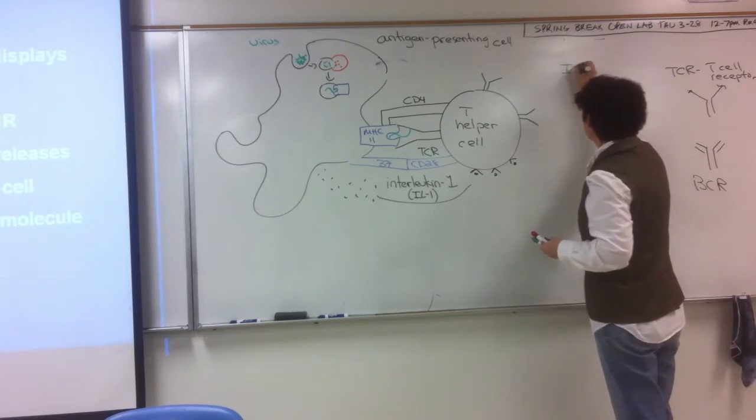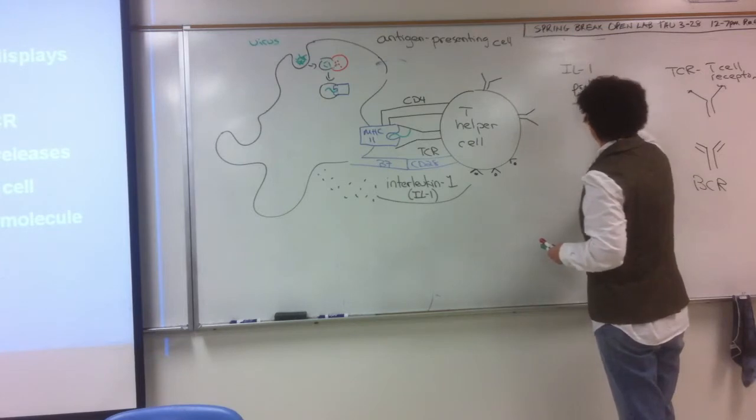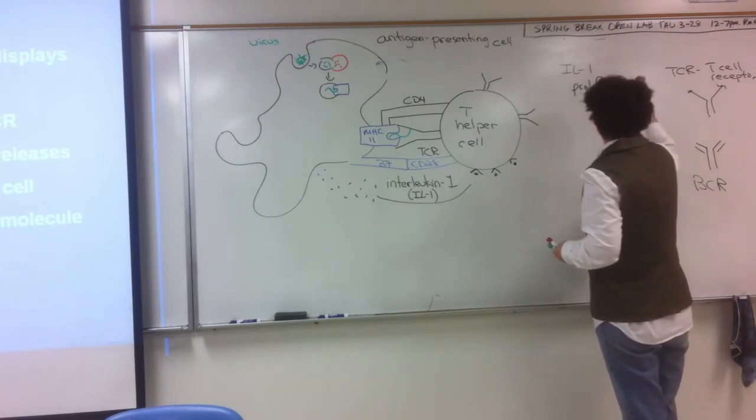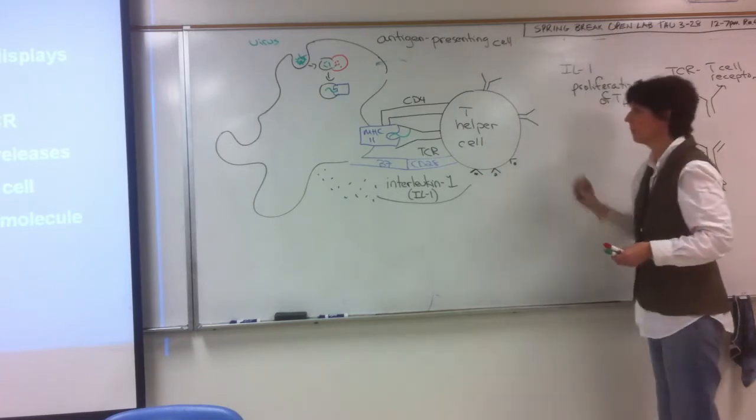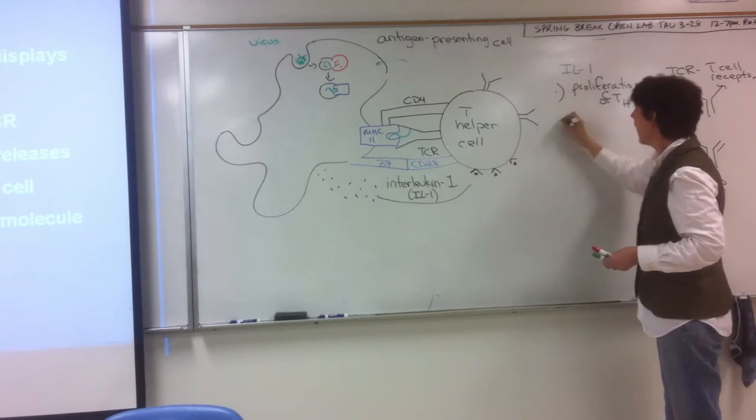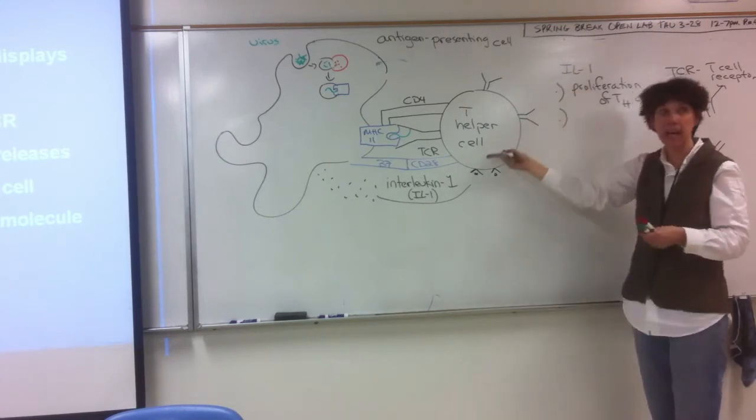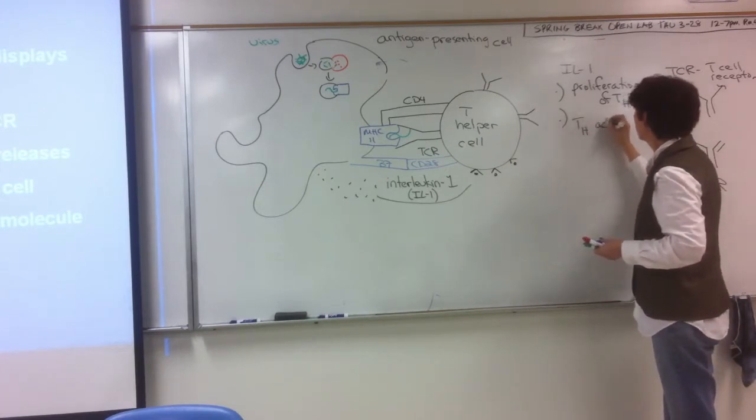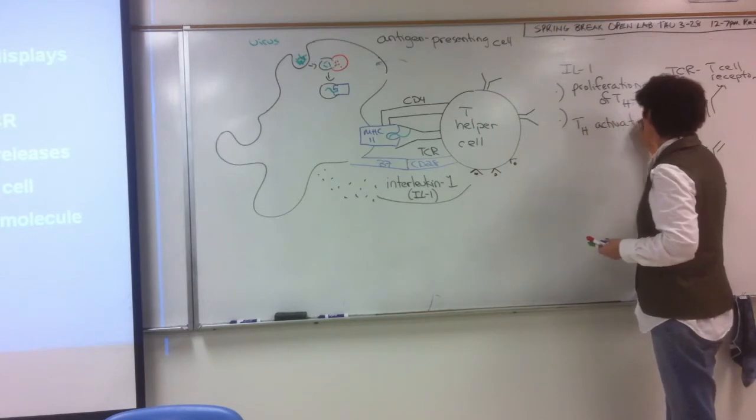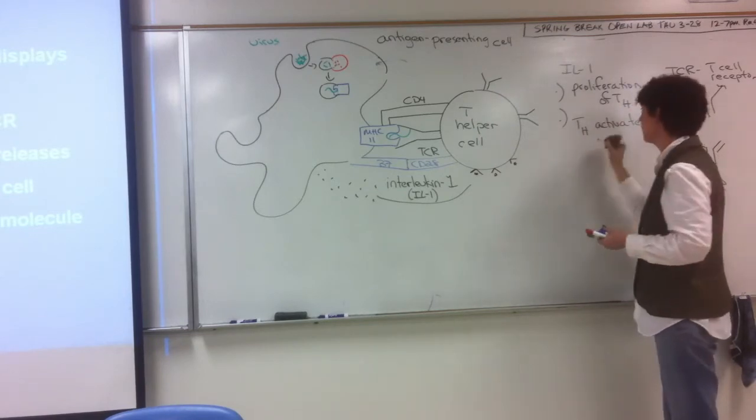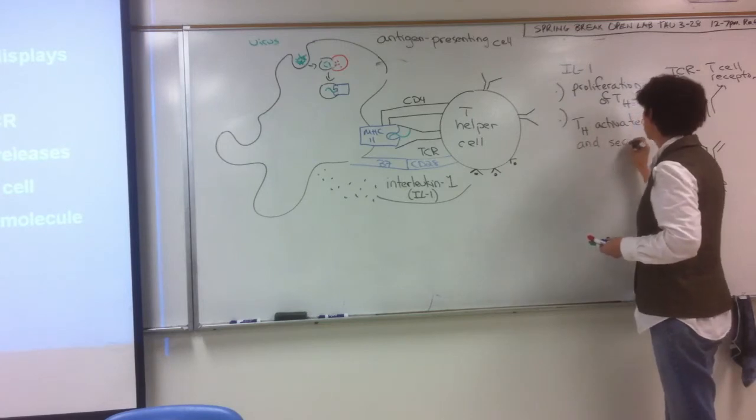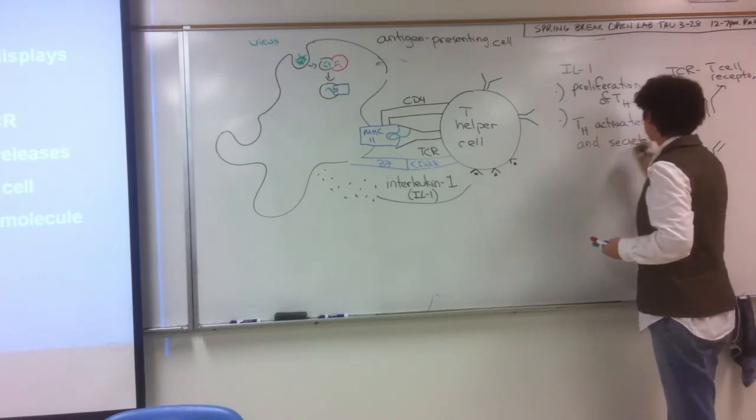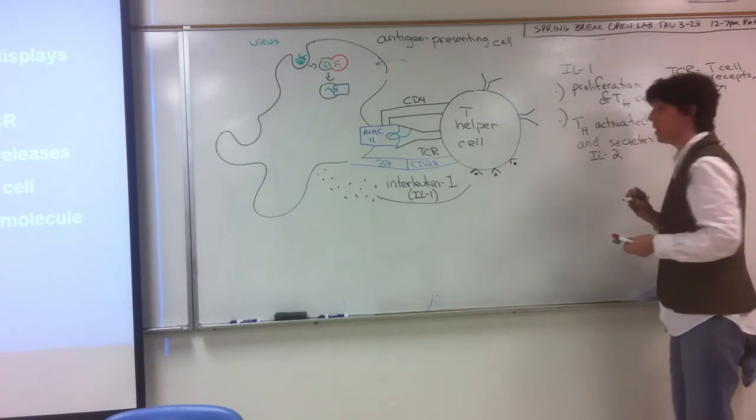So, the binding of interleukin-1 results in proliferation, mitosis, cloning, if you will, of this particular T-helper cell. And, it also results in the T-helper cell being activated. And, it secretes its own interleukins, known as interleukin-2.